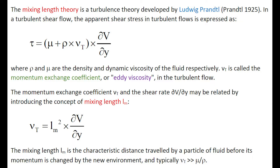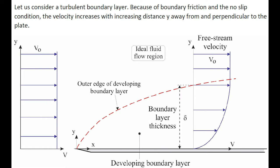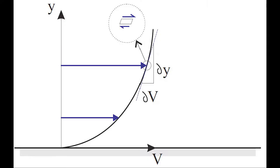Let us consider a turbulent boundary layer. Because of boundary friction and of the no-slip condition, the velocity increases with increasing distance away from or normal to the plate.